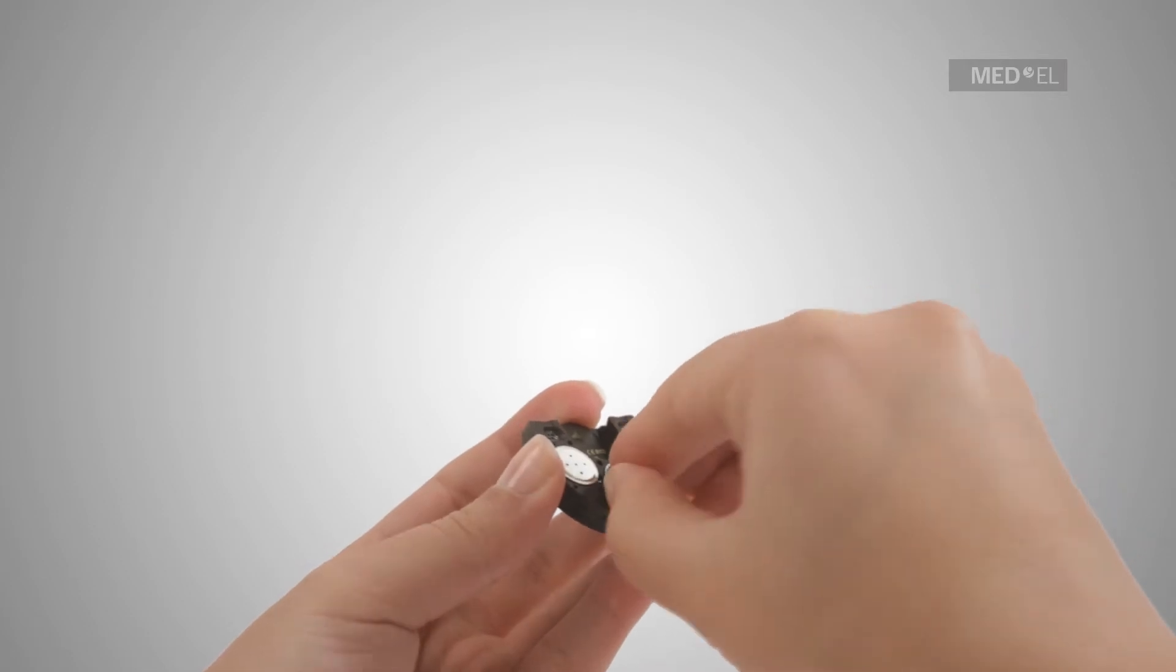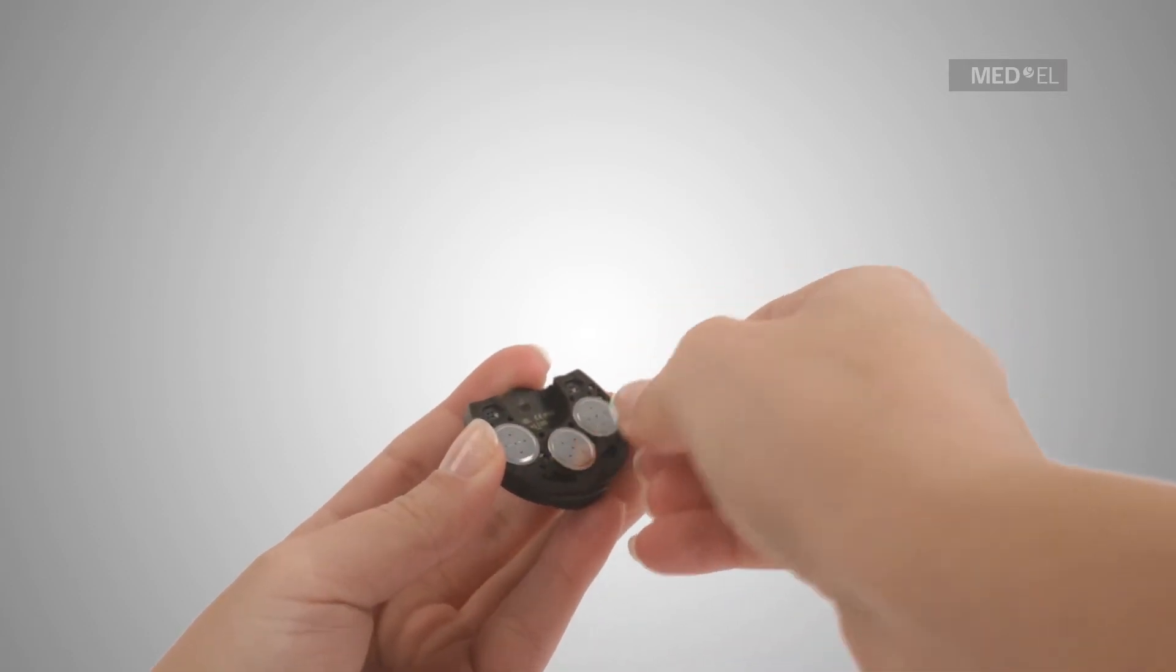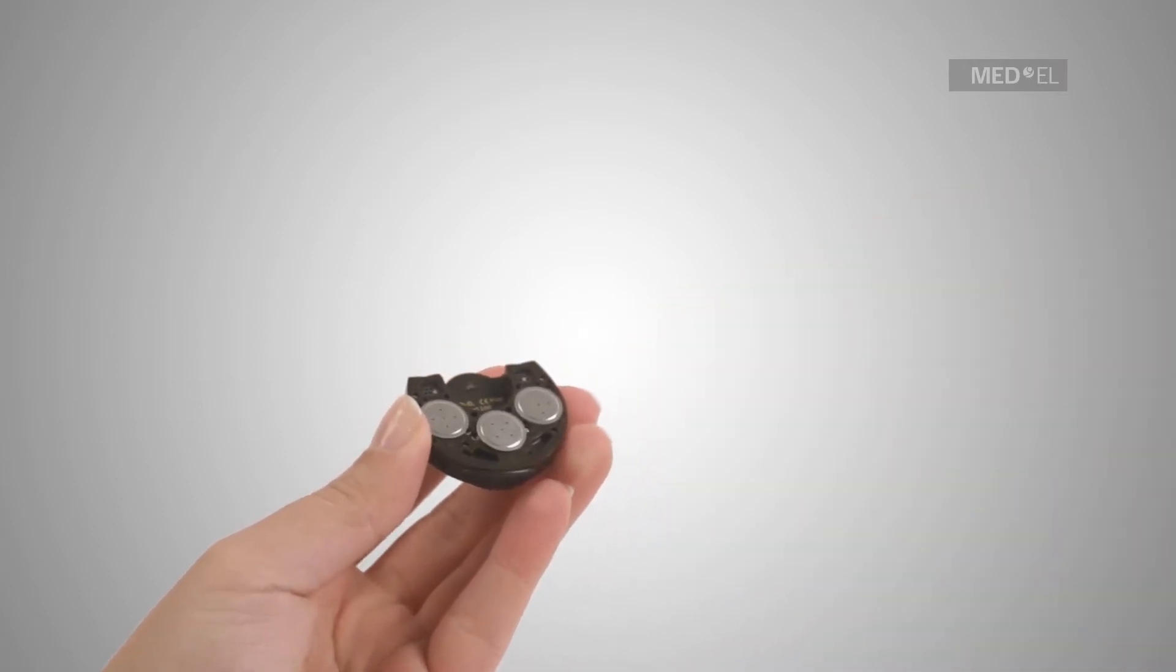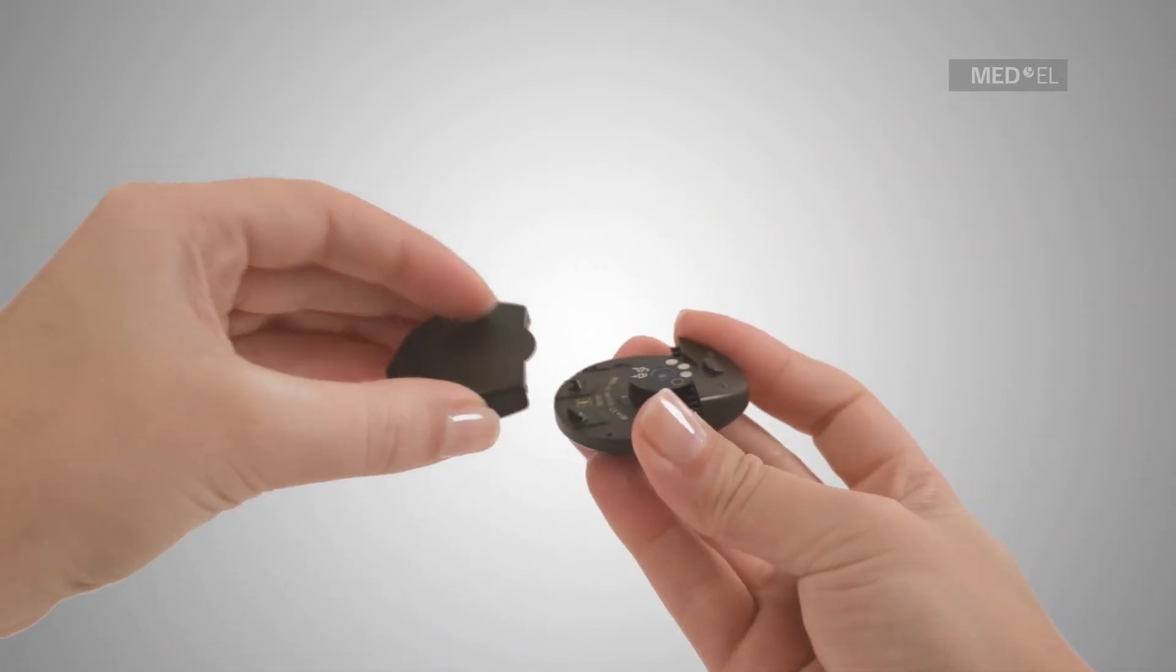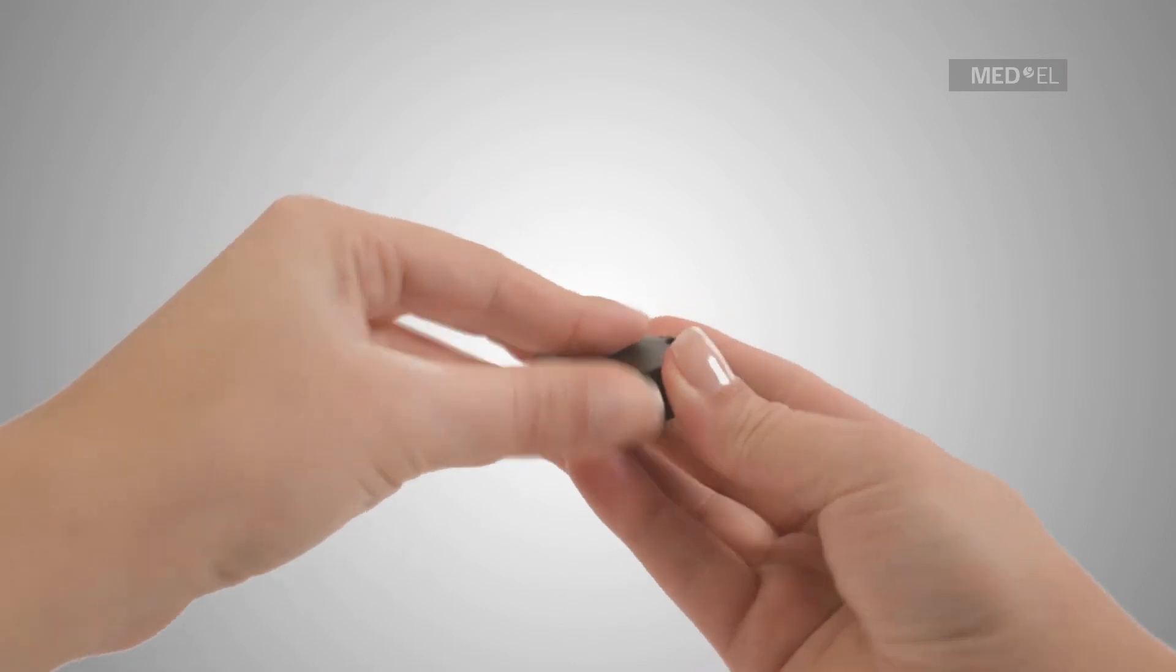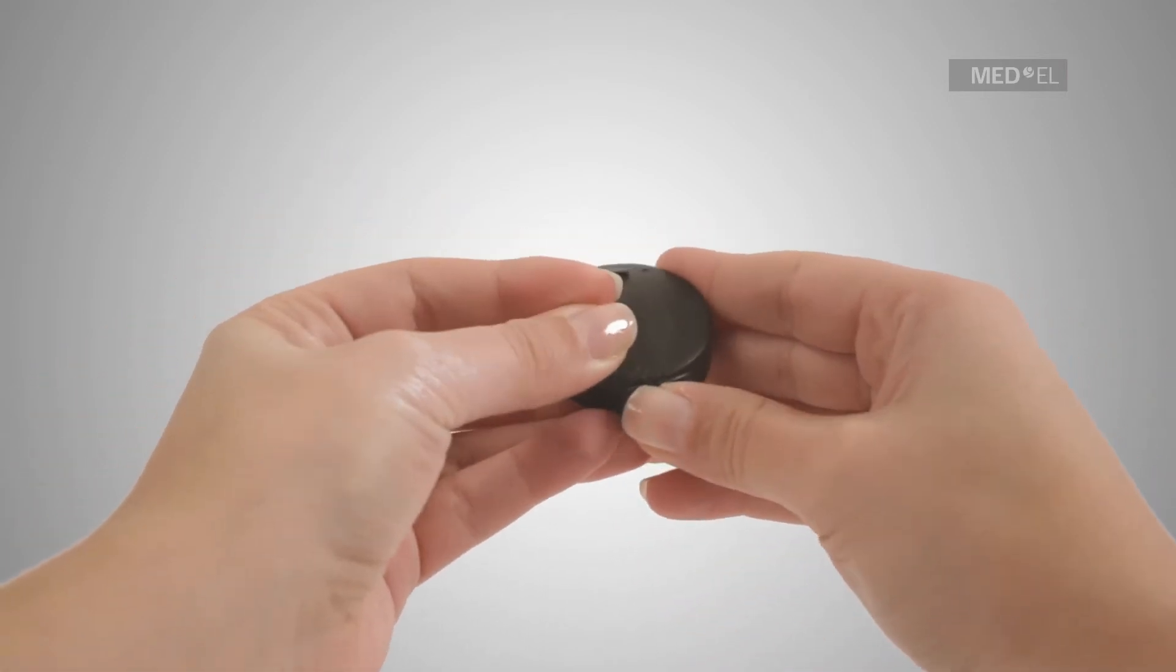To reattach the battery pack once the batteries have been changed, use the Gently Landing Airplane method. The battery pack should come in at a slight angle against the back side of the control unit.